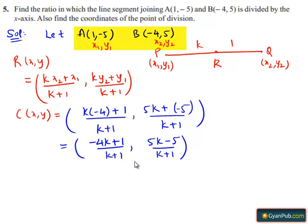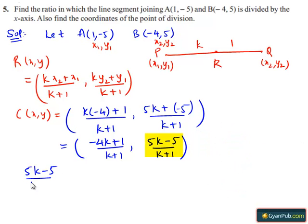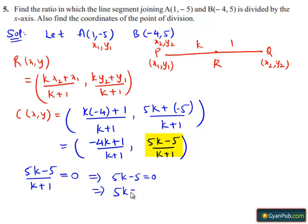Since this point lies on the x-axis, its y-coordinate must be 0. That is, (5k - 5) / (k + 1) = 0, which implies 5k - 5 = 0, which implies 5k = 5, which means k = 1.